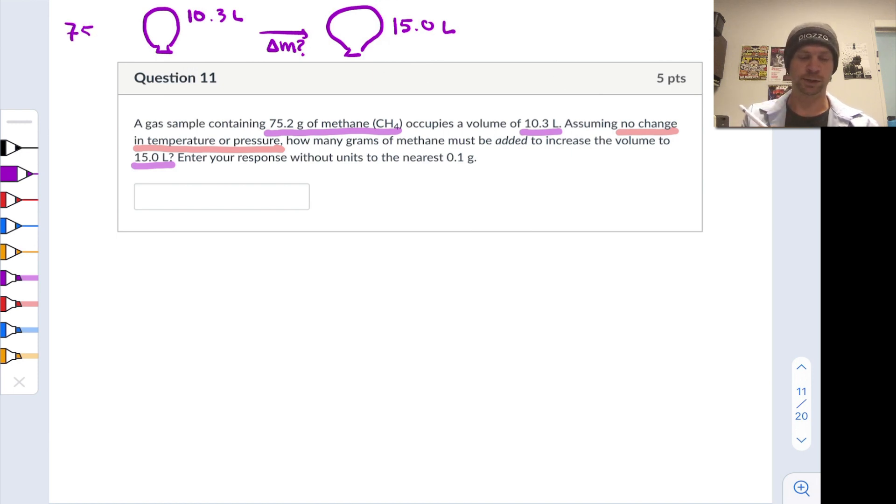So what we want to know is the change in mass in going from the initial situation where we've got 75.2 grams of methane in the balloon initially to a final mass, m sub f. We're going to need to figure that out to determine the delta or change in mass needed to get up to 15 liters.